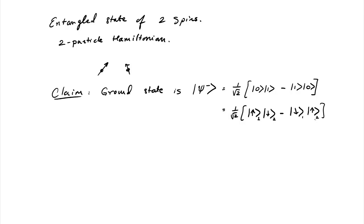This state is called the singlet state. It has total spin equal to zero, and this is in fact the state of electrons in a covalent bond. This is the Bell state which is rotationally invariant with respect to all rotations. The Hamiltonian of the system, because these two spins feel each other, is of the form of some constant times the spin of the first electron dotted with the spin of the second electron. This gives you an idea about how you actually create two-qubit gates and entanglement between different spins.